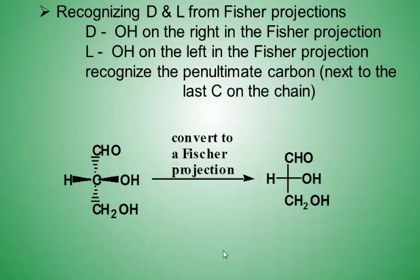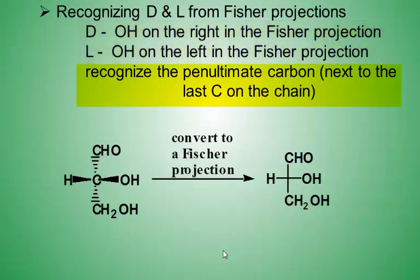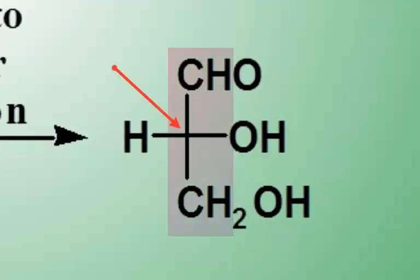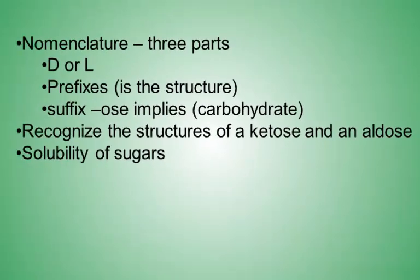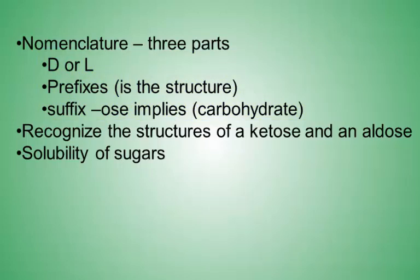Another important component of Fischer projections is the D and L designation and the penultimate carbon. The penultimate carbon is the next-to-last carbon on the vertical carbon chain. You will not be responsible for memorizing the formal names of carbohydrates, but I do want you to recognize the components of systematic names: the D/L designation, the prefix which indicates structural information, and the suffix -ose which implies the molecule is a carbohydrate. I do want you to recognize if a carbohydrate is a ketose or an aldose.